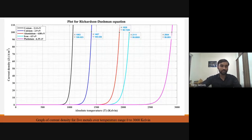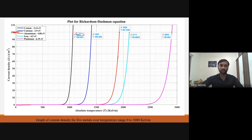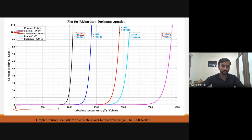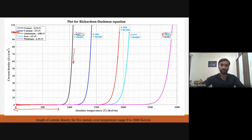This plot covers 0 to 3000 K showing all five metals. For roughly the same constant value of current density, different materials require very different temperatures — around 1000 K for cesium and around 3000 K for platinum. The graph shows that for an initial low temperature range, the change in current density with temperature is very low — almost constant. But at higher temperatures, the current density becomes very sensitive to temperature, increasing very rapidly.